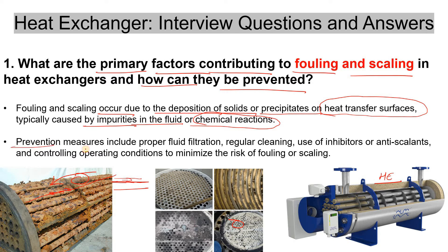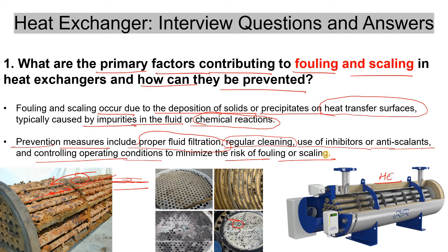How to prevent it? Prevention measures include proper fluid filtration upstream — if you ensure proper filtration, it will obviously prevent or reduce fouling and scaling. Then regular cleaning: while continuous cleaning is not possible, you can address it in your annual turnaround or short shutdown. Use of inhibitors or anti-scalant is also recommended, along with controlling operating conditions such as temperature and pressure to minimize the risk of fouling and scaling.